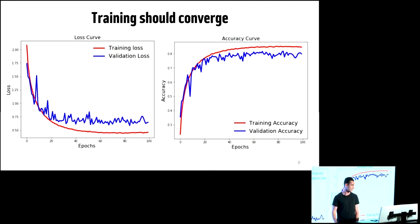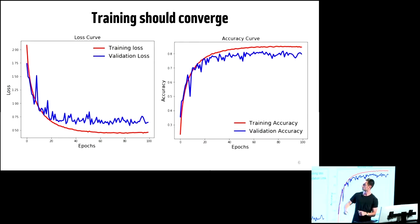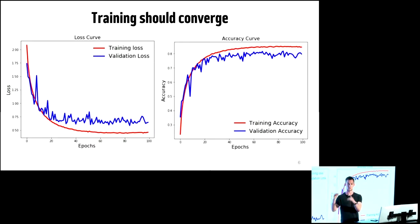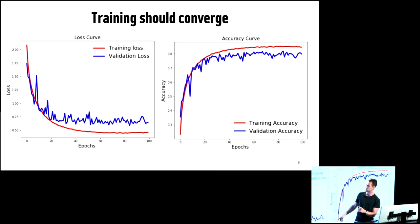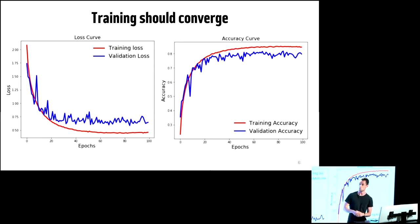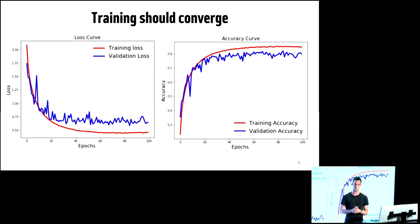What we should ideally get is a loss curve and an accuracy curve. We have training loss and validation loss. Typically in machine learning we have training data and test data — test is held out for final evaluation, and we can further split training into training and validation to monitor model performance. Loss should go down and converge; accuracy, which is essentially the converse, should go up and converge. If these plots diverge, it's evidence of overfitting — where the model is training on training data and not generalizing, so it performs poorly on validation data.